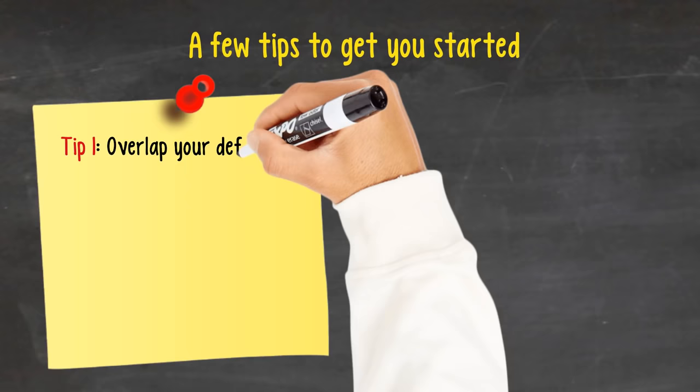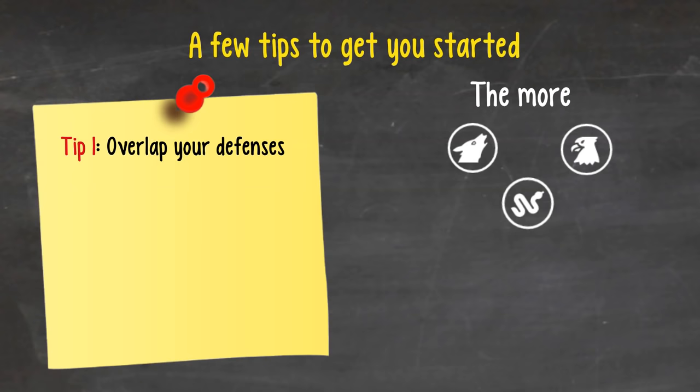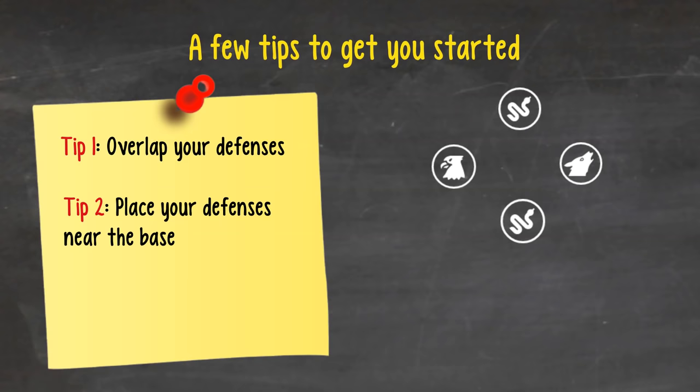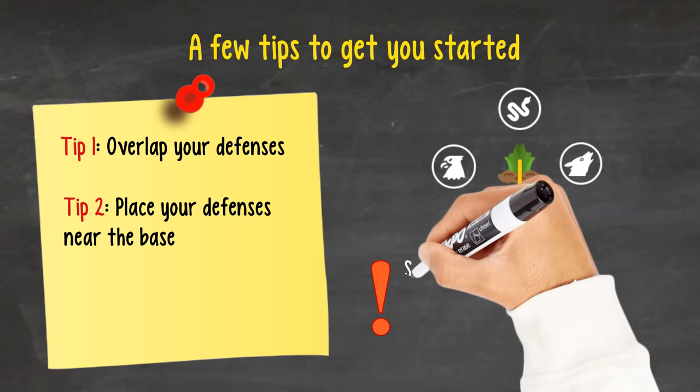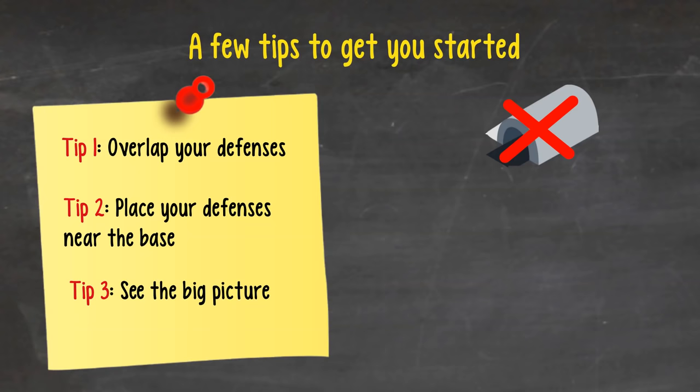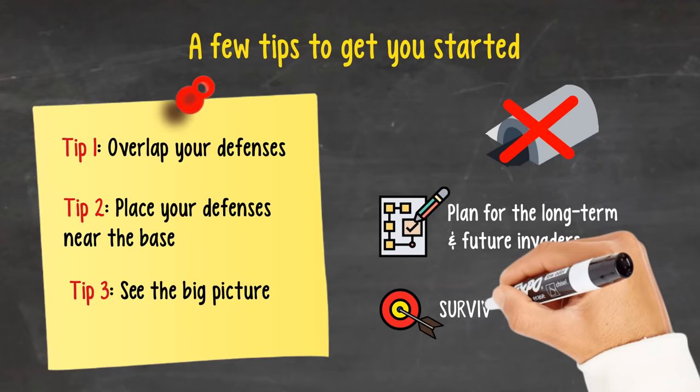There are so many formulations and formations and tactics you can apply to maximize the survival length. You'll get to read a version of that in the PSG simulation package. In the limited scope of this video, here are a few tips to get you started. Tip 1. Overlap your defenses. This is one of the few cases where being MECE has a disadvantage. The more your defenders and terrain overlap, the more damage they cause to invaders, and the less likely your base will be taken. Tip 2. Place your defenders near the base. The logic for this is simple. Think of your defense as a ring. The closer it is to the center base, the smaller it needs to be. Smaller rings mean you can cover the whole circumference more easily and have more overlap. Tip 3. See the big picture. Don't get tunnel vision and look at immediate invaders only at the moment. Plan for the long term and future invaders as well. Remember, you still have the objective of surviving as long as possible.